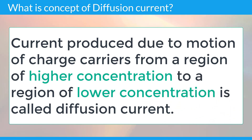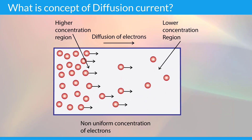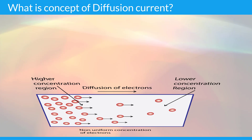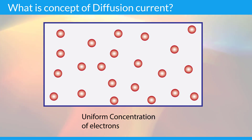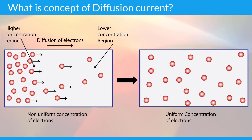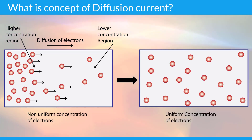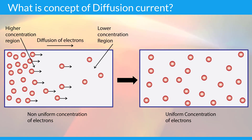Diffusion process occurs in a semiconductor that is non-uniformly doped. Consider an n-type semiconductor that is non-uniformly doped as shown here. Due to the non-uniform doping, more number of electrons are present at the left side whereas less number of electrons are present at the right side. These electrons experience a repulsive force from each other and will move from left to right to reach uniform concentration. Electrons that move from left side to right side constitute the diffusion current.